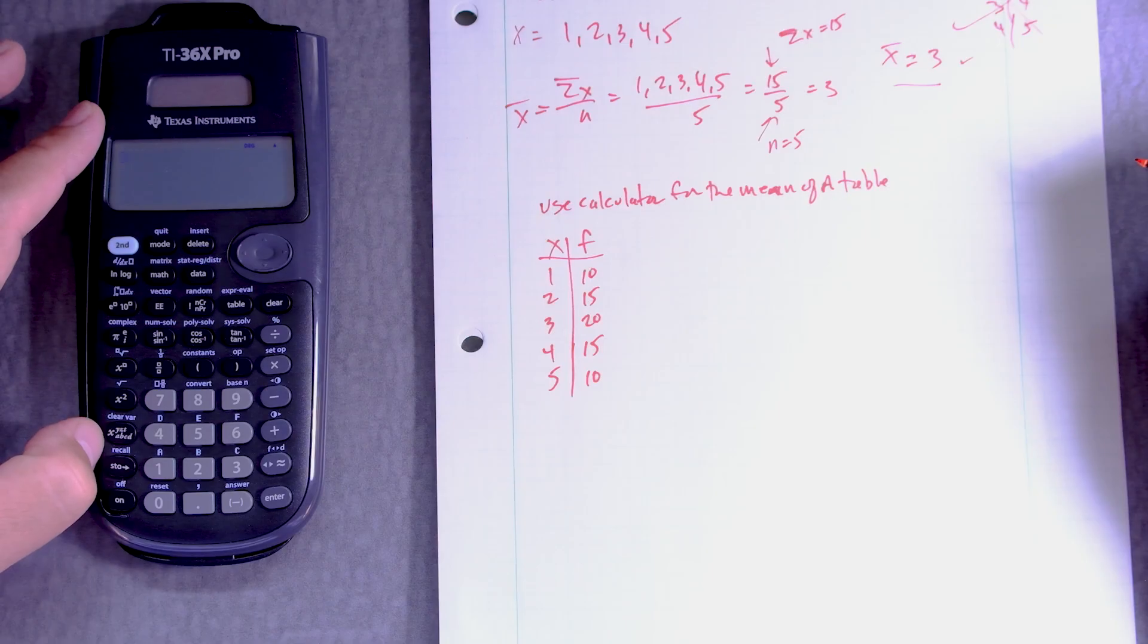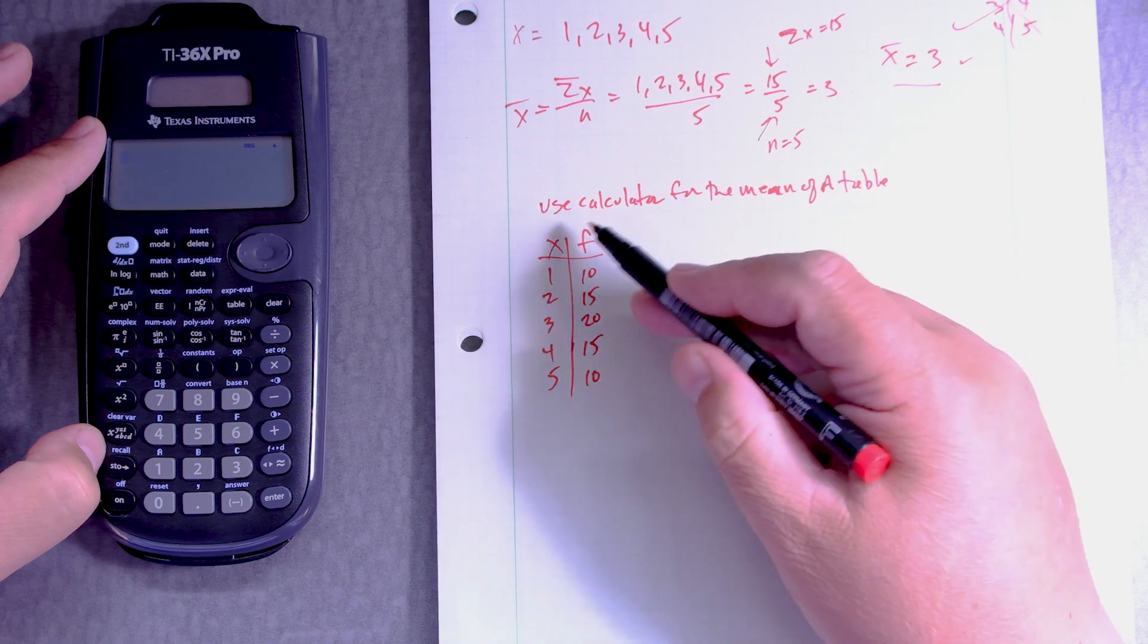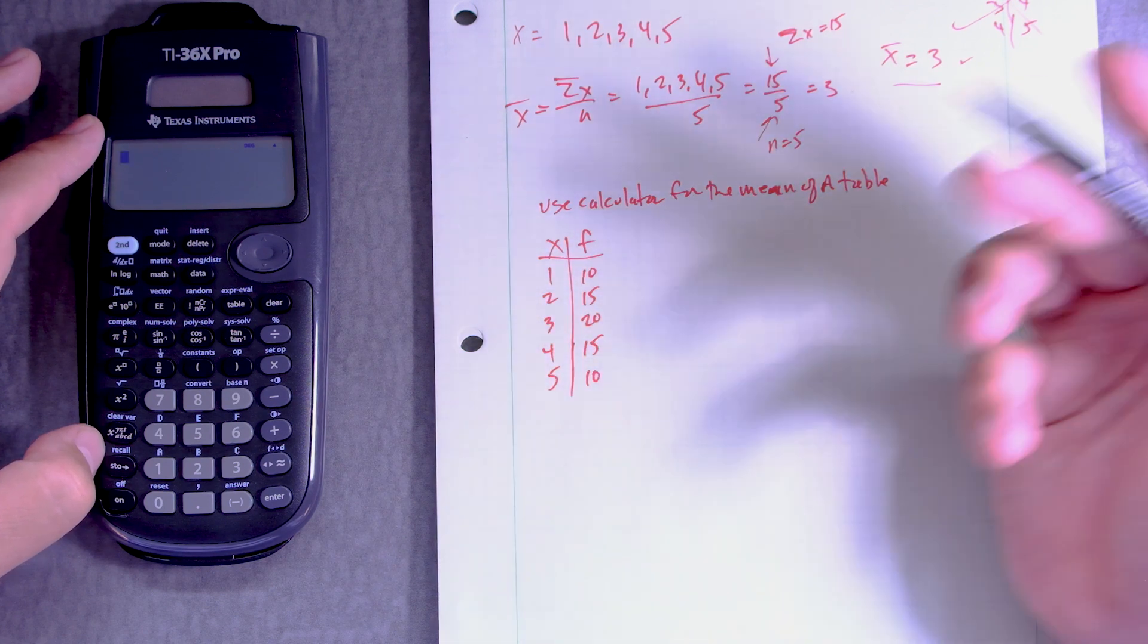So this is the TI-36X Pro and what I want to do is I want to take this frequency table and find the mean. How do I do that?